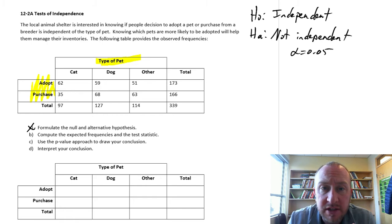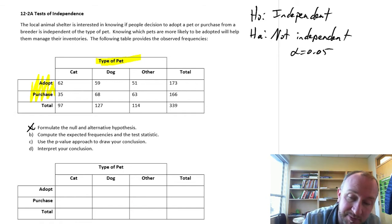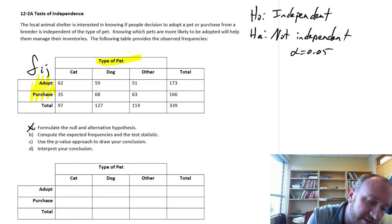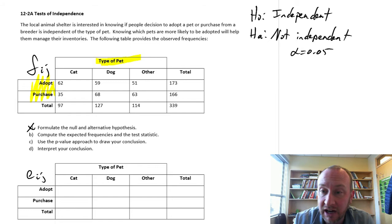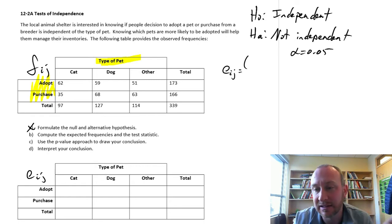For those of you who watched the preceding videos for 12.1 A, B, and C, where we're looking at testing for equality across multiple population proportions, the calculations here for the expected frequencies are exactly the same. This table is giving us our observed frequencies. This table is giving us our expected frequency. And in order to calculate those, it's exactly the same formula.